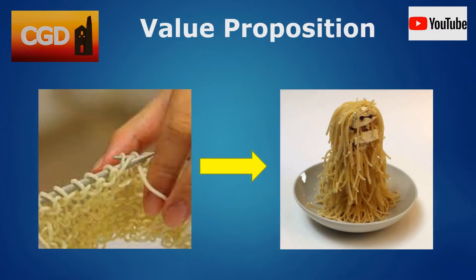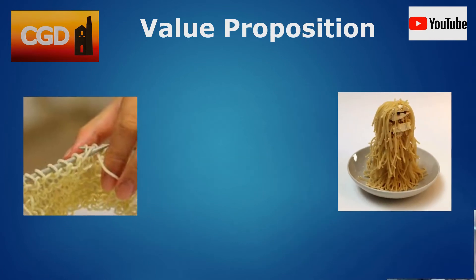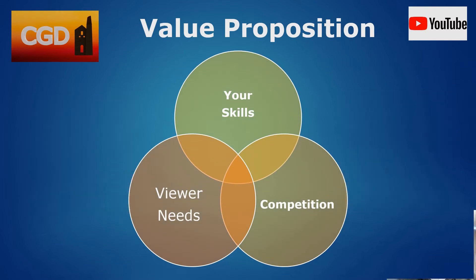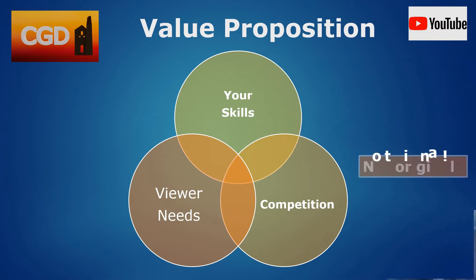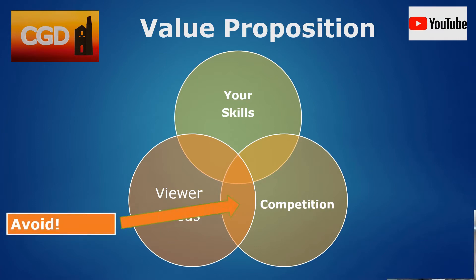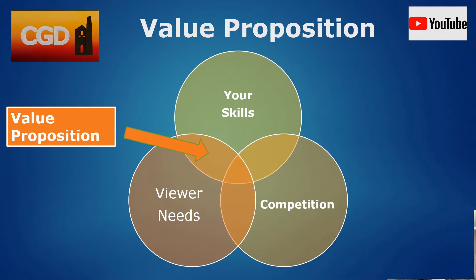Consider that you want to make videos on hand-knitted yetis using cooked pasta. If you consider your value proposition, you need to answer three questions. First, do you have the skills to knit a spaghetti yeti? Second, are there enough viewers interested in knitting spaghetti yetis? Third, are there other channels already offering that content? If you and your competitors offer something viewers aren't interested in, don't bother. If viewers want it but other channels supply it, you're in a competitive arena. If you have the skills, the viewers want to learn, and there's a gap in the market, that's your value proposition.